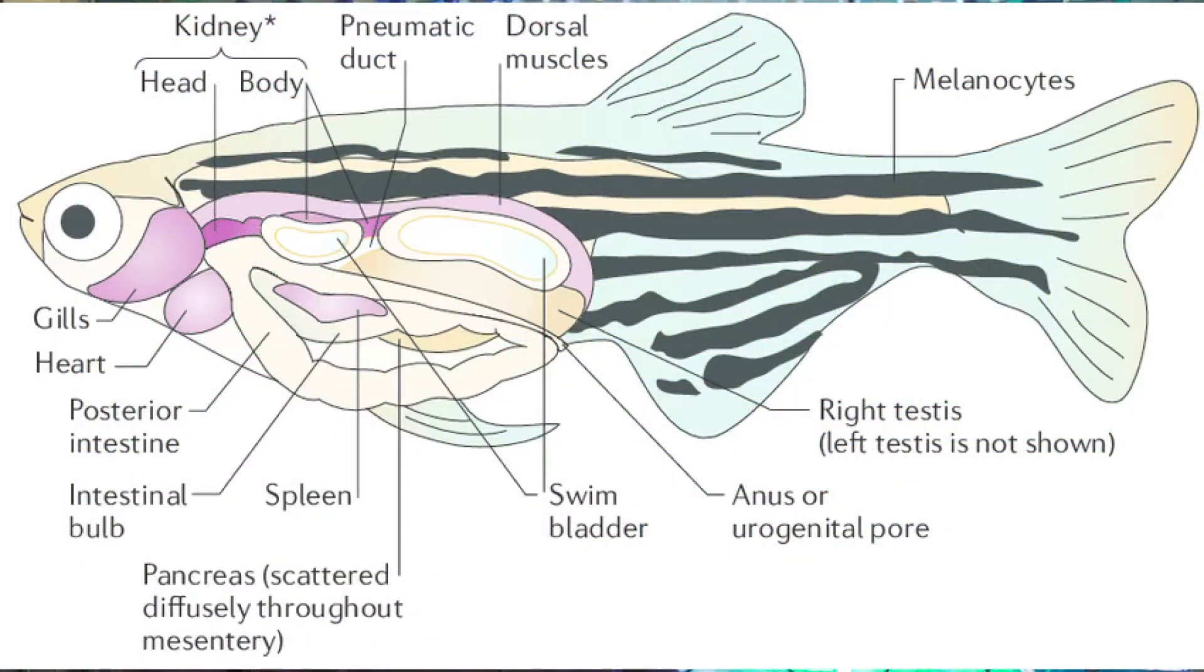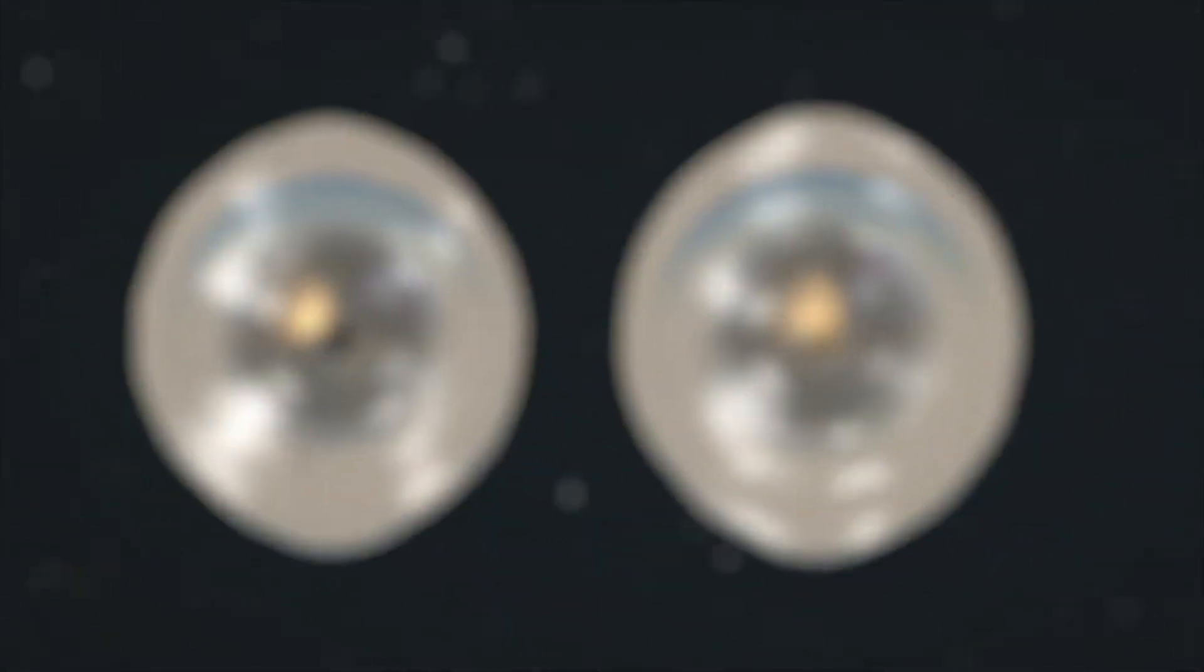At the very base of all the villi that are lining the intestine, there are stem cell compartments. In the adult, they're well established and controlled. There are cells that regulate how they divide, when they divide, and how many they produce.